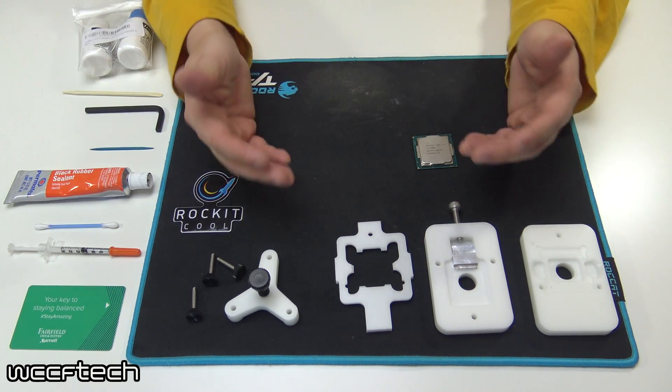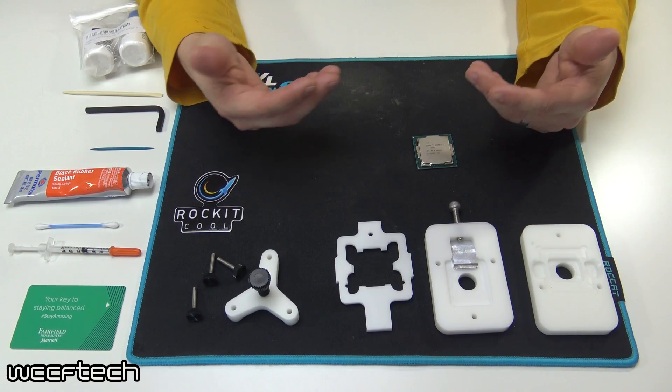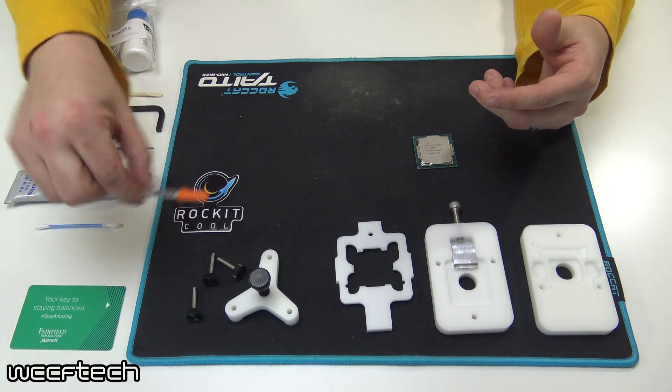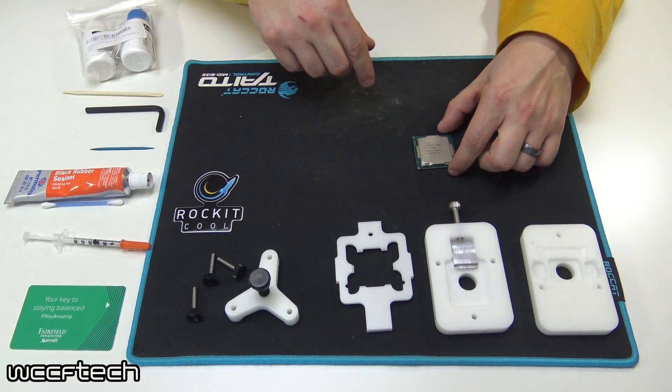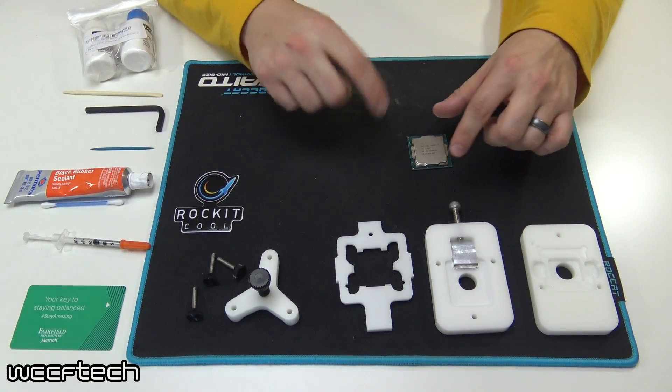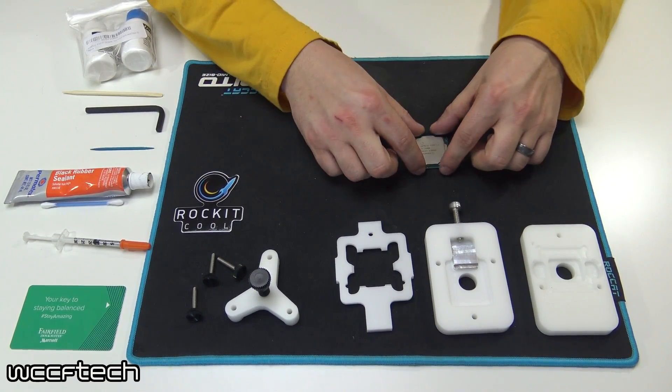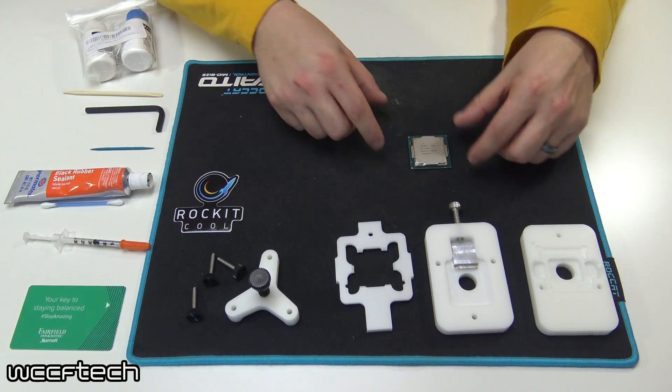So a lot of people will delid the chips to drop the temperature and then use something like the Cool Laboratory Liquid Pro here and then put the chip back into the socket and then use the brace to clamp it down to secure it.